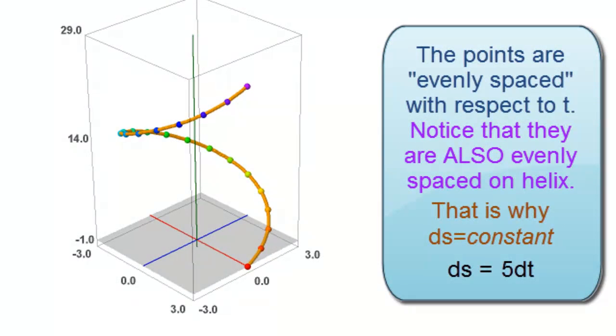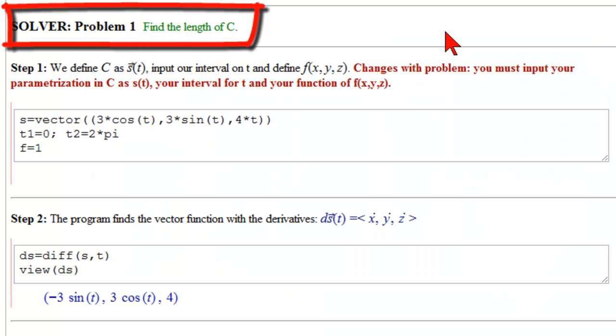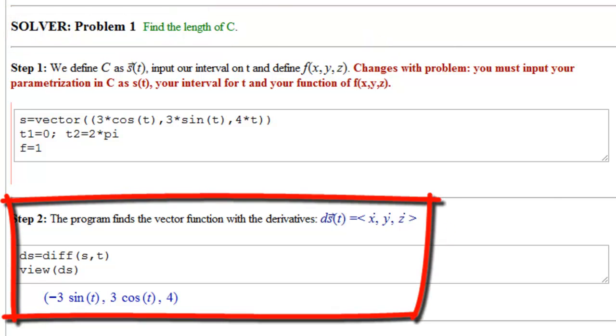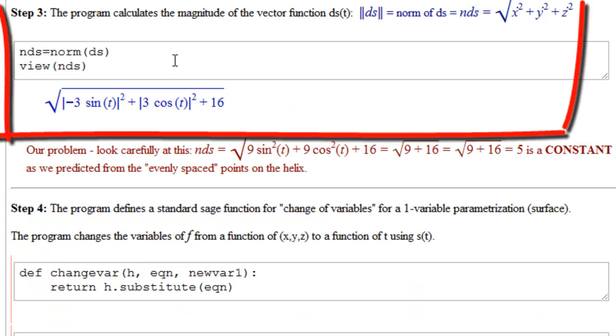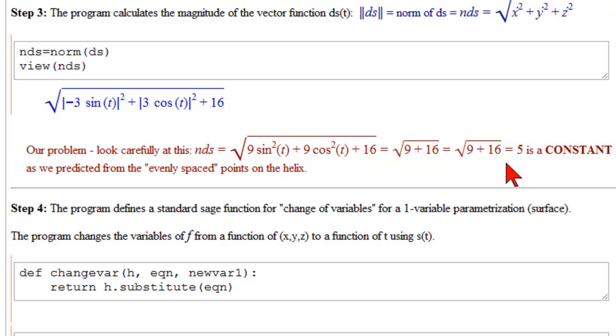We've drawn points along the helix, evenly spaced with respect to t. Notice that they're evenly spaced with respect to the curve itself. That's where we're getting that derivative magnitude is constant 5. Here's where we're using our solver to check our work. We tell the program, find our derivative vector ds. Notice that we have it correct: minus 3 sine t, 3 cosine t, 4.